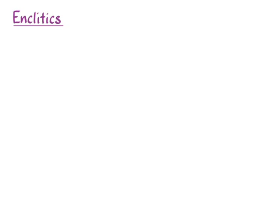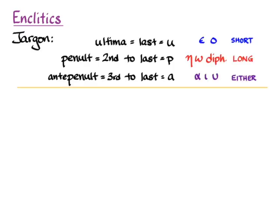Let's first remind ourselves of some of the basic rules of accent. Here is the jargon that we can use and some of the symbols that go with it. Remember that we can only put accents on the last three syllables of a word, and so we have names for those last three syllables: the last is the ultima, the second to last is the penult, and the third to last is the antipenult.